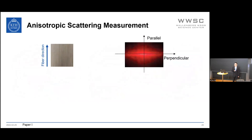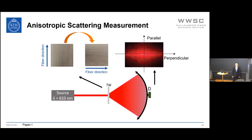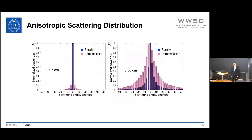To analyze the scattering ability of transparent wood, the angular distribution of transmitted photons is measured. The transparent wood is either placed normally or rotated 90 degrees, so the detector captures scattering angles both perpendicular and parallel to the fiber direction. For two different thicknesses, scattering perpendicular to the fiber direction is always stronger than parallel to the fiber direction. With increasing sample thickness, the scattering distribution is broadened.